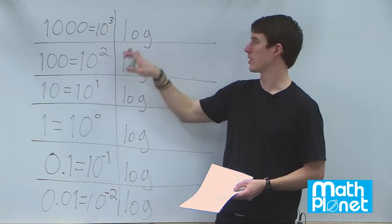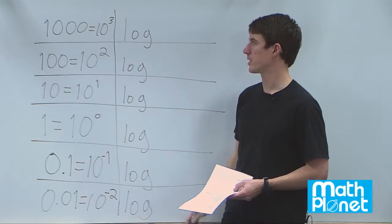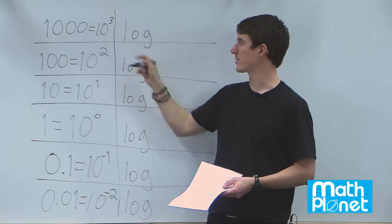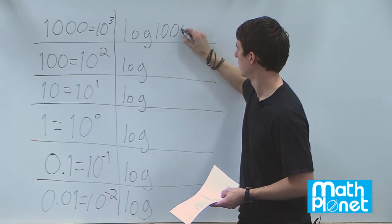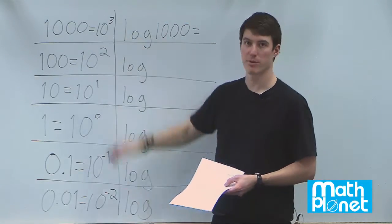So let's write these same equations as an equation with a logarithm. So I'm going to take the logarithm base 10 of both sides. So logarithm of 1000 is the same as the logarithm of 10 to the power of 3.